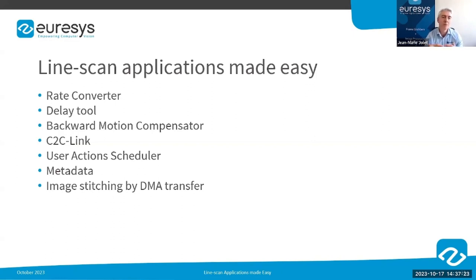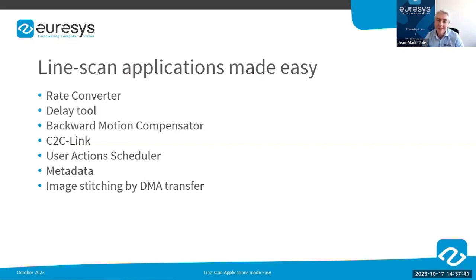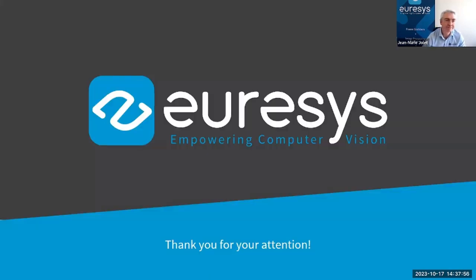The requirement for motion makes line scan application development a bit more complex compared to area scan. However, thanks to the Rate Converter, delay tool, Backward Motion Compensator, C2C-Link, User Action Scheduler, metadata insertion, and full DMA transfer control, using Euresys frame grabbers to develop line scan applications definitely makes it much easier. This concludes the main presentation.